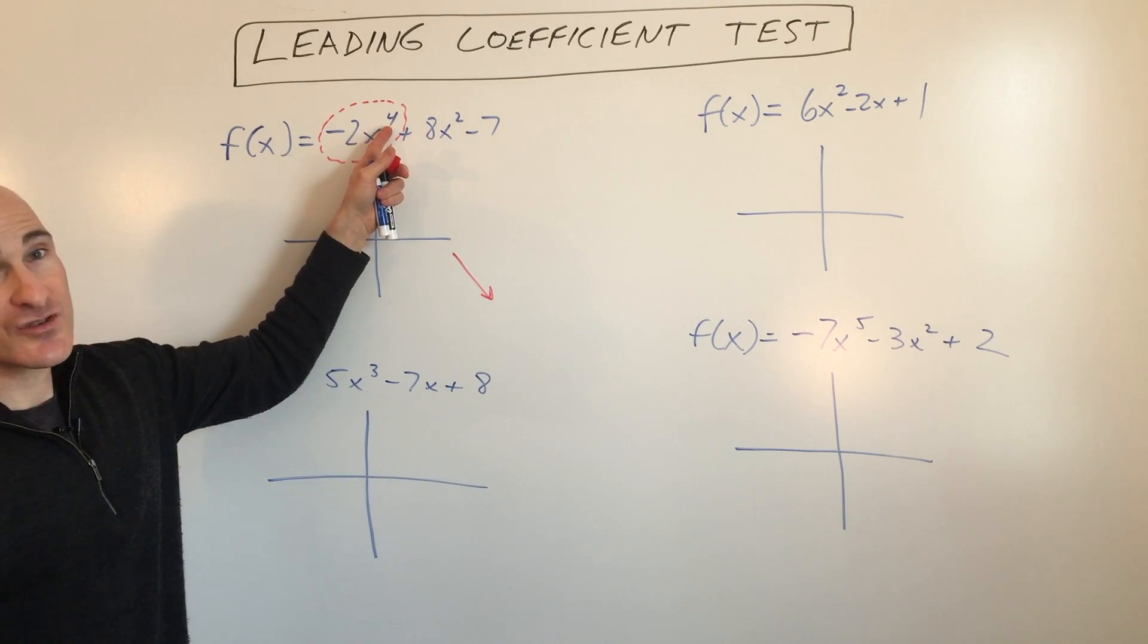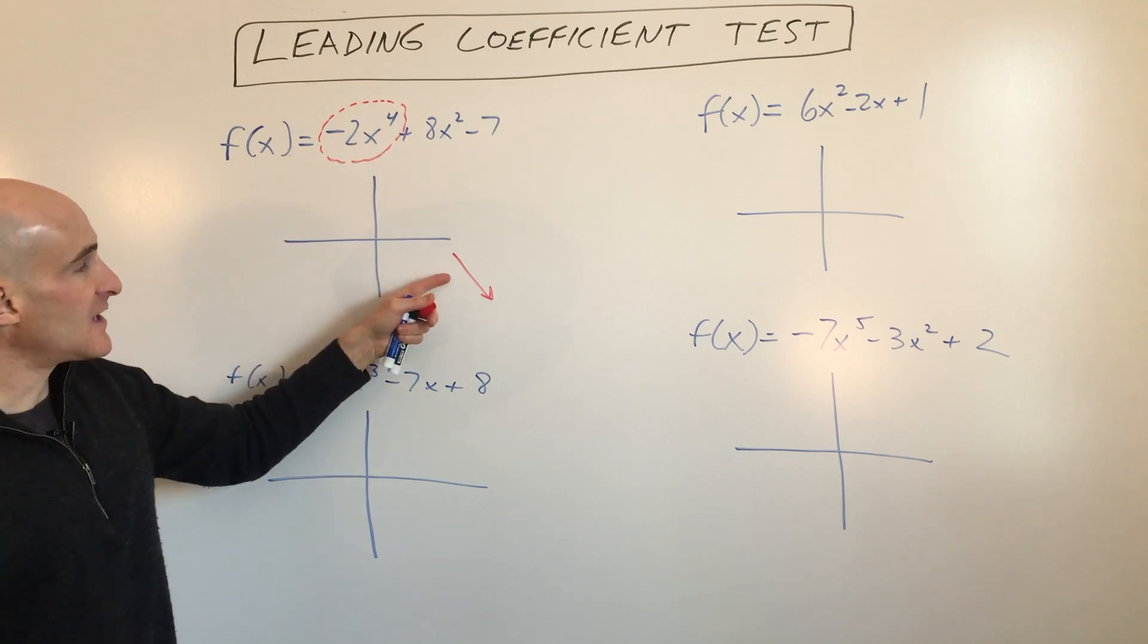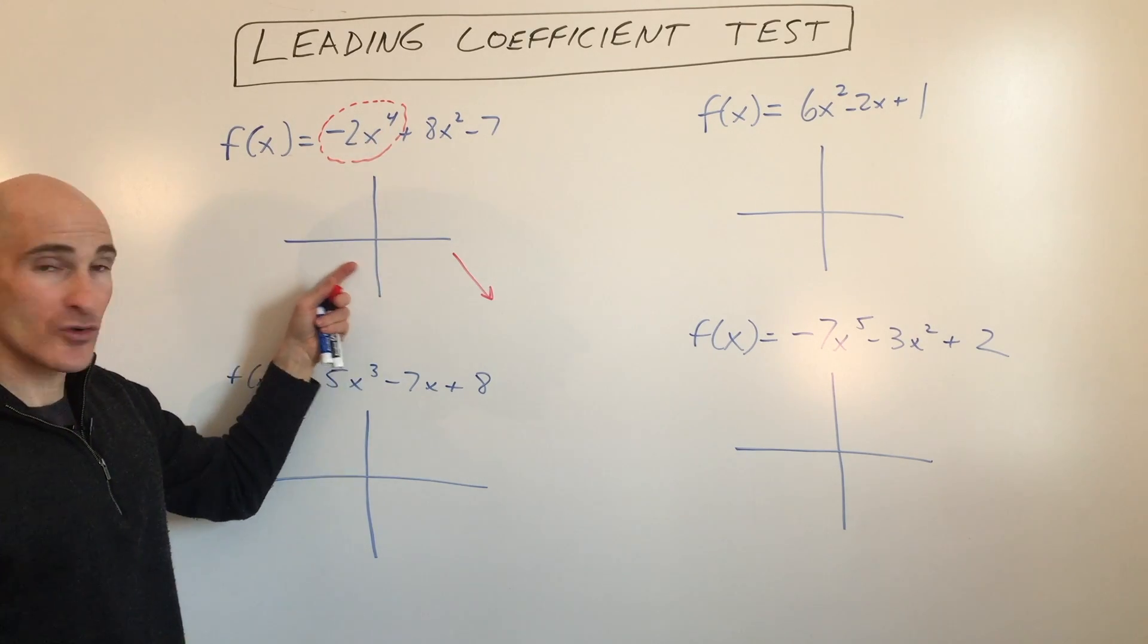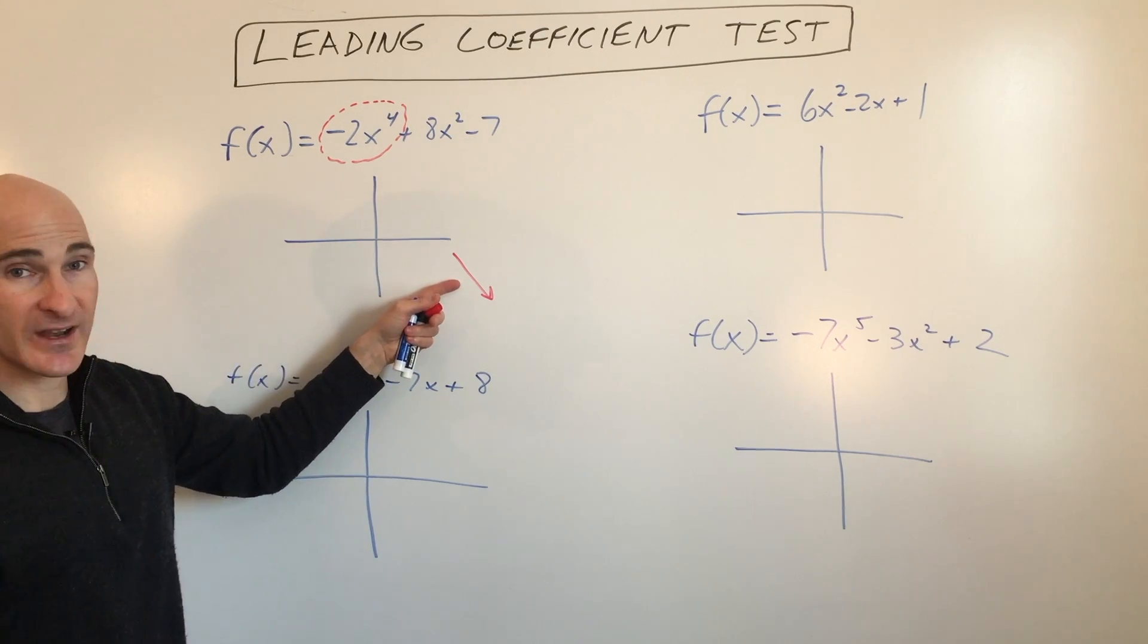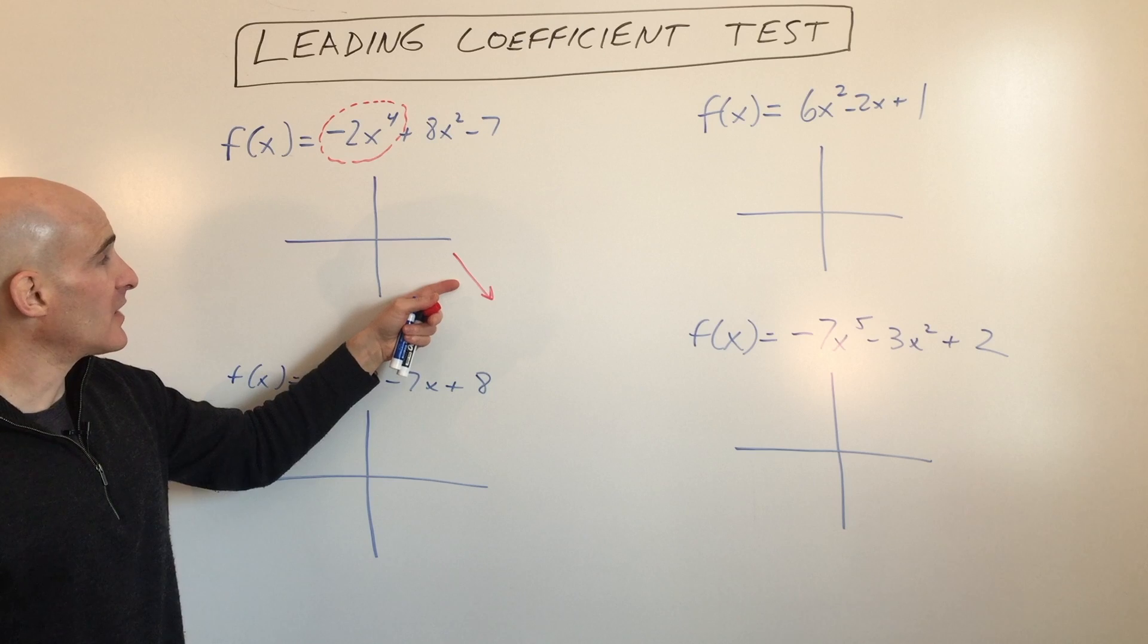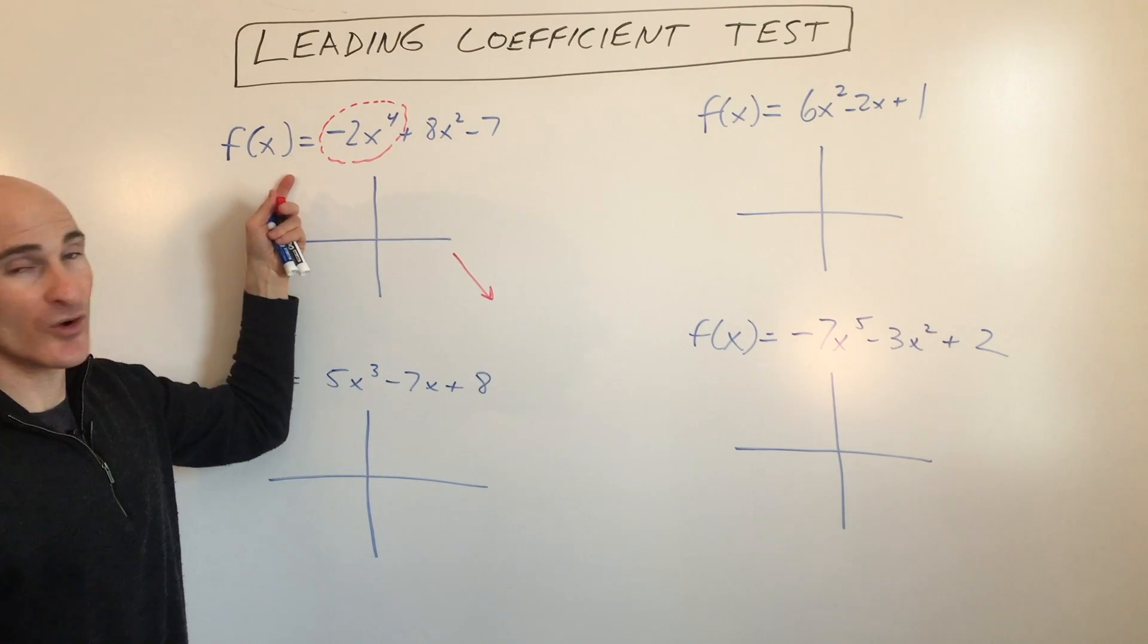Now, if it's an even degree—if this highest power term is even—what that tells you is that the end behavior as you go to the left is going to have the same end behavior as the right side of the graph. So if it's going down, this will be going down. If this was going up, then this would be going up.